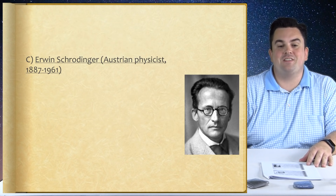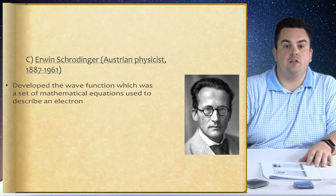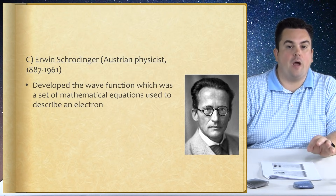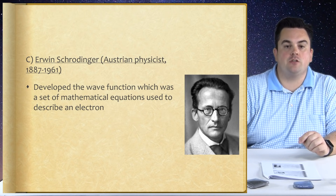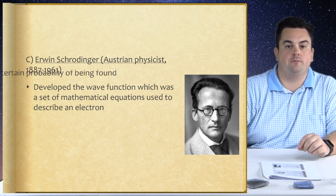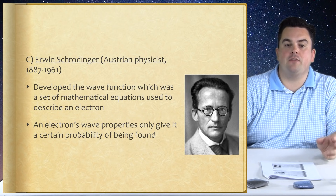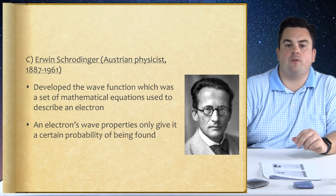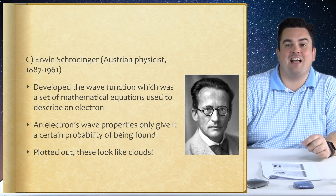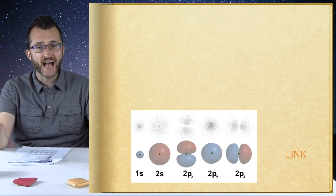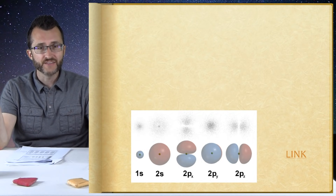Erwin Schrödinger, Austrian physicist, 1887–1961. Schrödinger developed the wave function, a set of mathematical equations used to describe an electron. An electron's wave properties only give it a certain probability of being found. Plotted out, these look like clouds. We have finally arrived at the modern model of the atom.